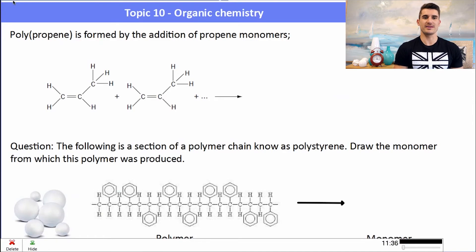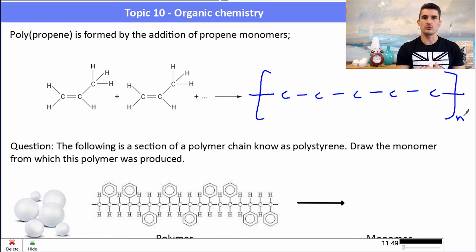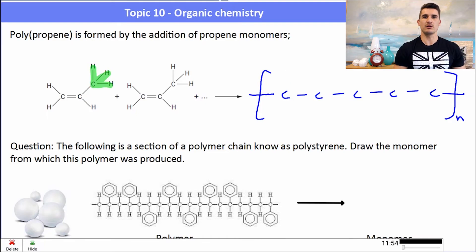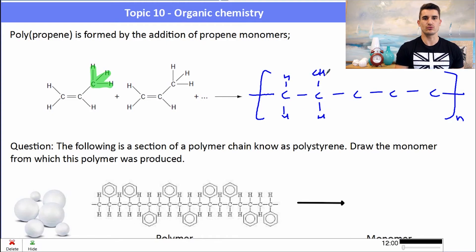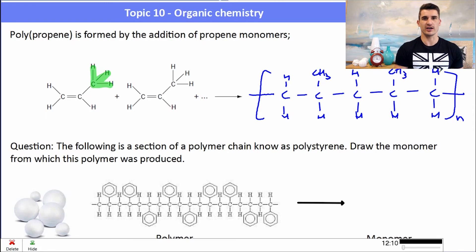Polypropylene is formed by addition of propene monomers. The C=C double bond breaks to join the monomers, and on every second carbon there is a methyl group protruding from the chain. This protrusion means the chains may not pack together as tightly, which changes the material's properties compared to polyethene.